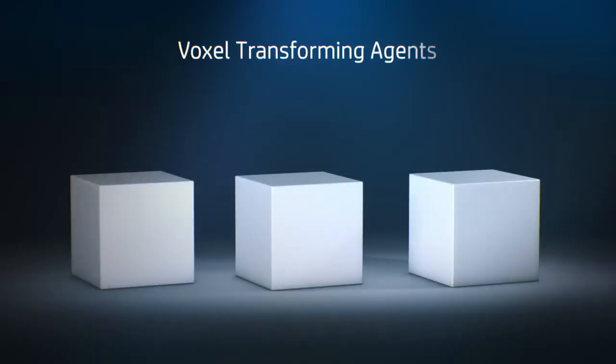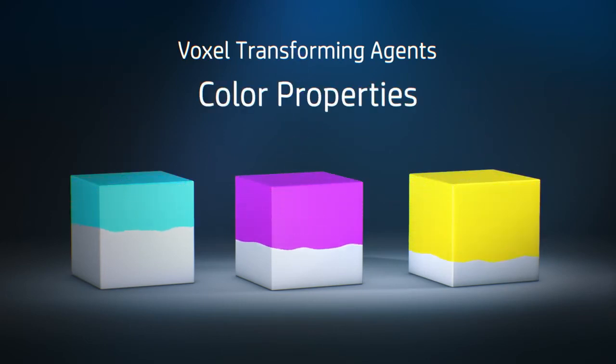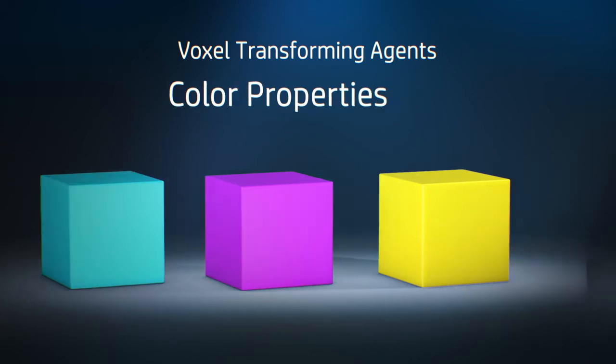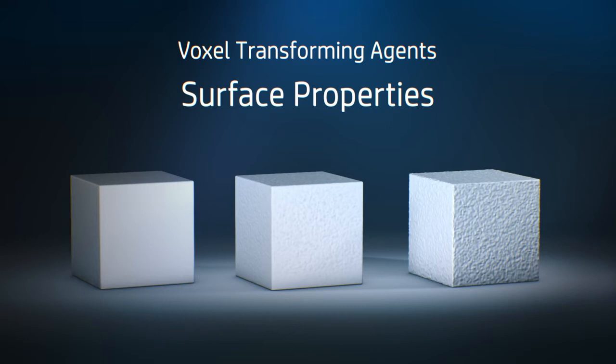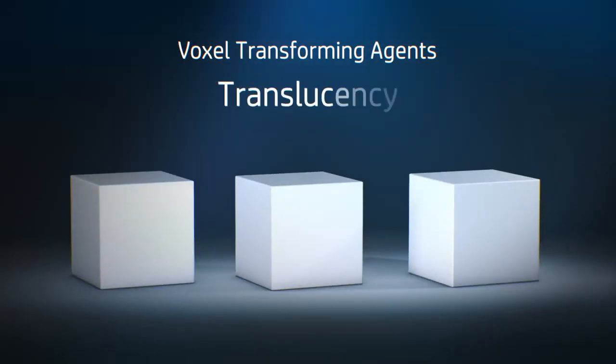But more than just full color printing of functional parts, HP's Multi-Agent System enables a fundamentally different approach that could unlock the full potential of 3D printing. At each voxel, HP Transforming Agents could control surface texture, wear and friction, enabling single parts with multiple textures or the monitoring of part performance.